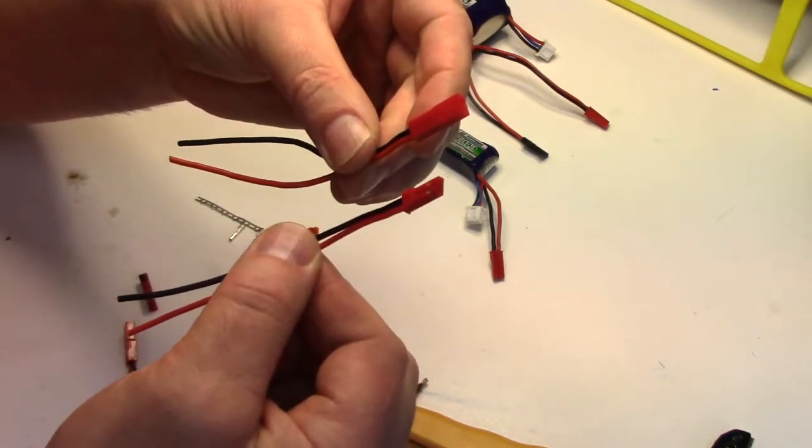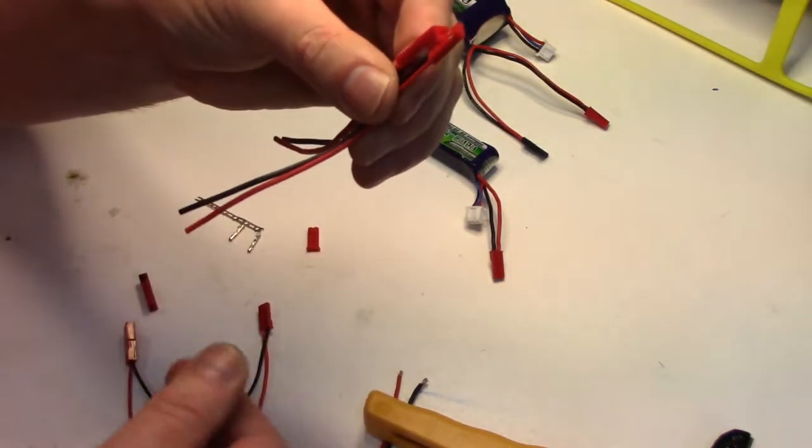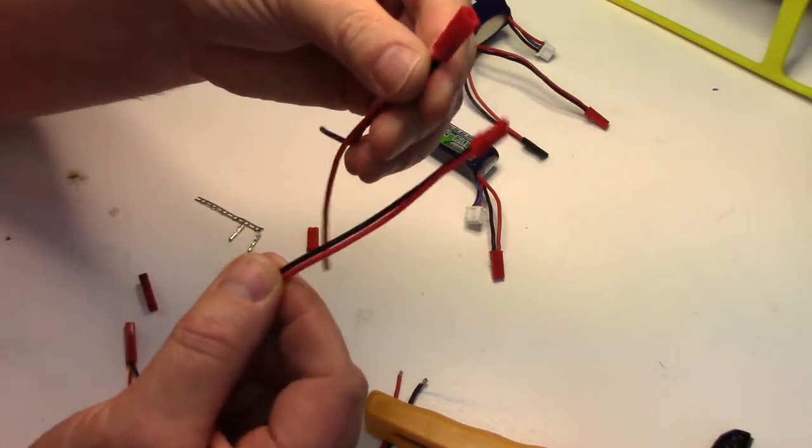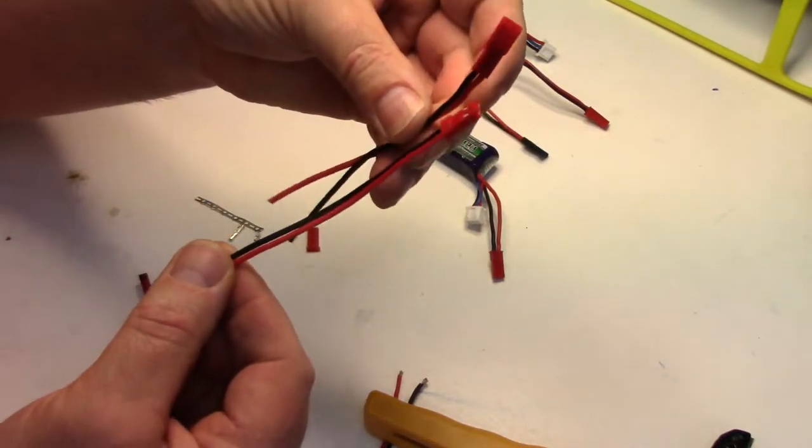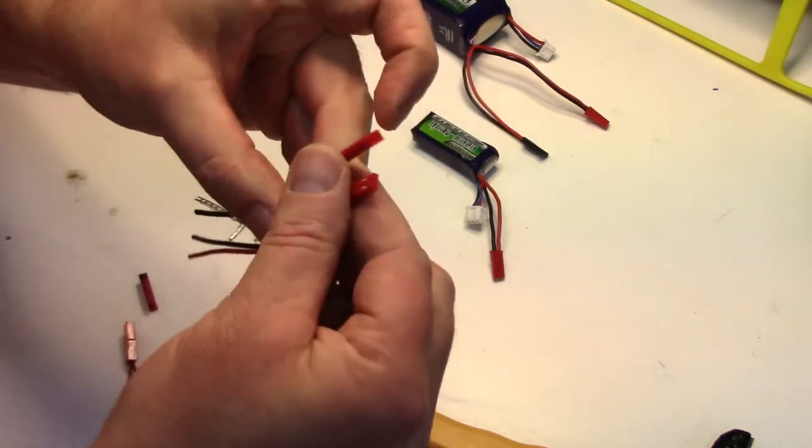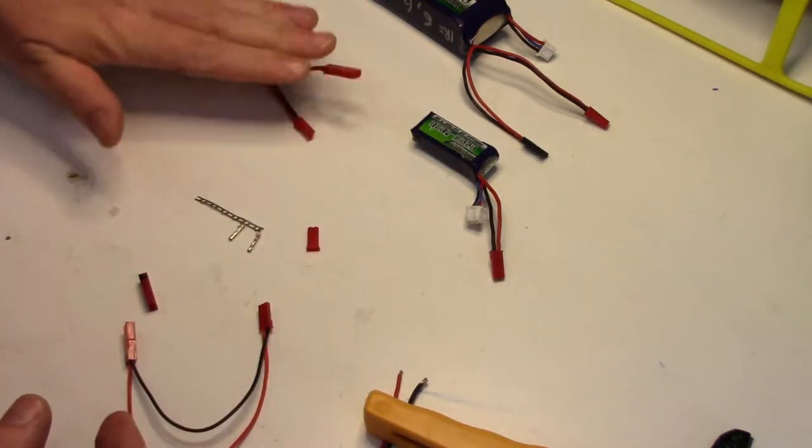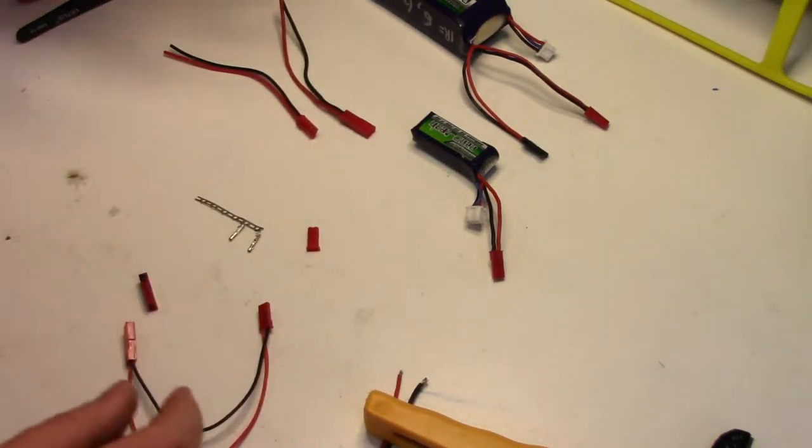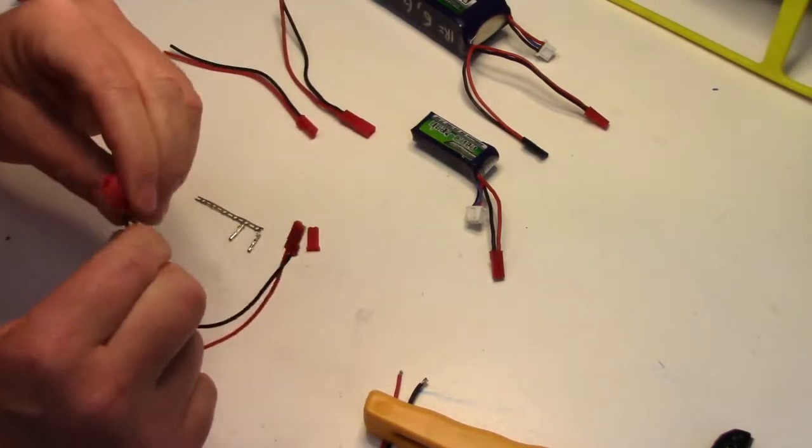Most people just buy these ones that are already pre-crimped with the pigtails on them, and then you can either splice them or solder them. But we'll show you how to crimp one. I'm actually getting low on these. I don't have any female plugs.